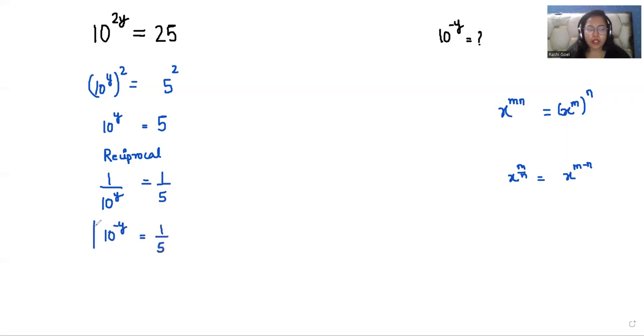So the value of 10 power minus y is 1 over 5. I hope it's clear and you find it useful. Please give us a thumbs up and subscribe to my channel.